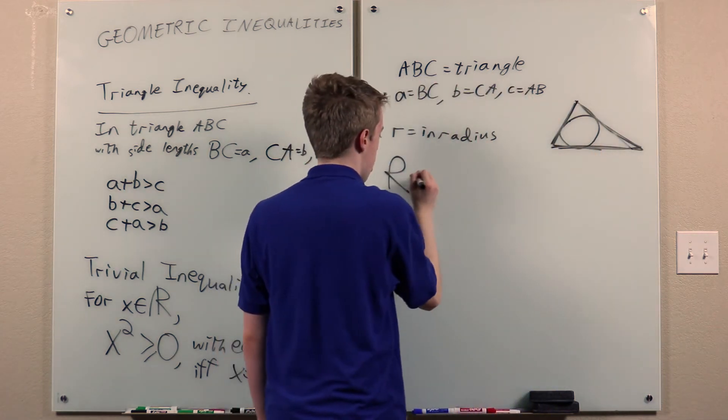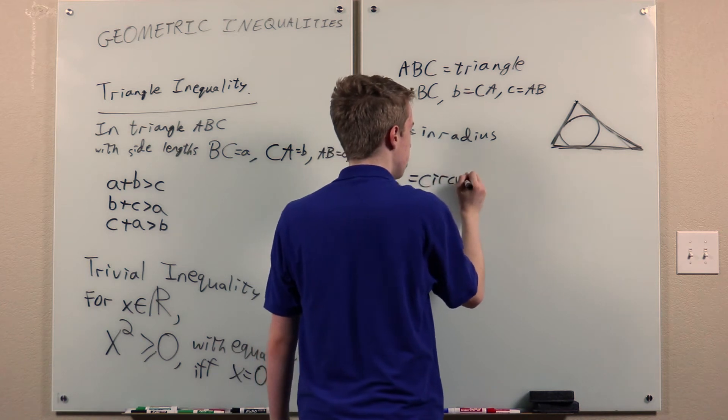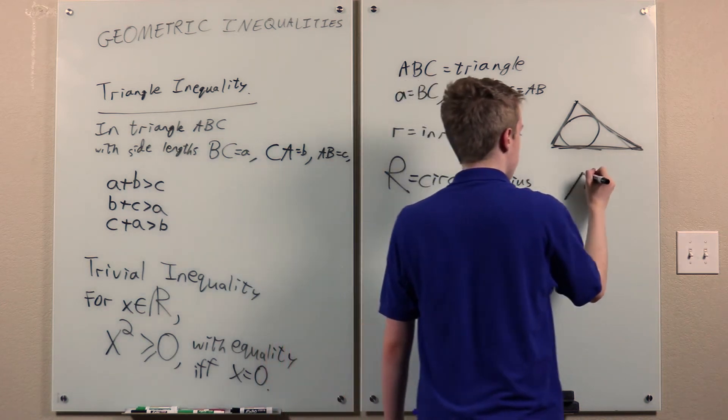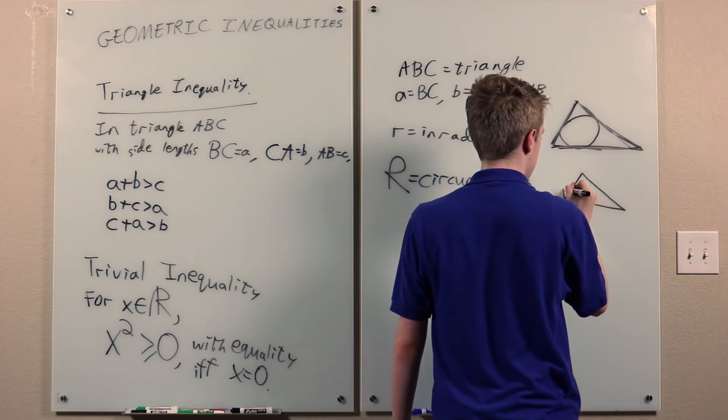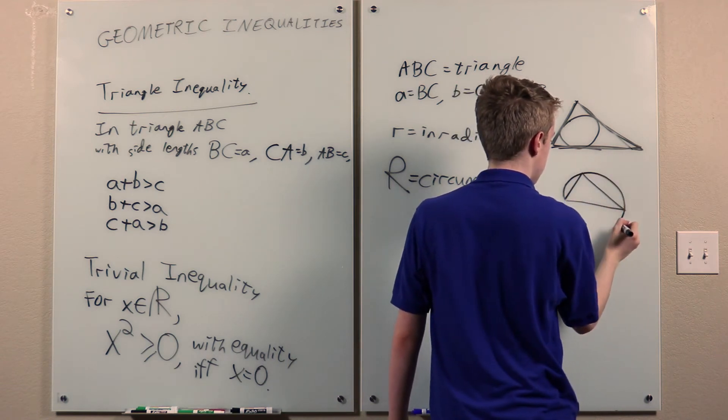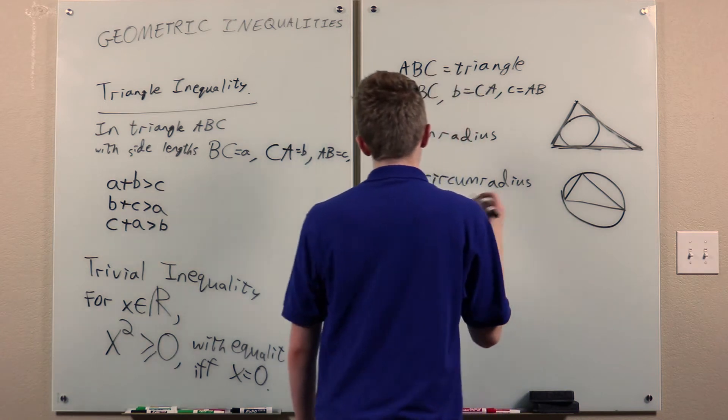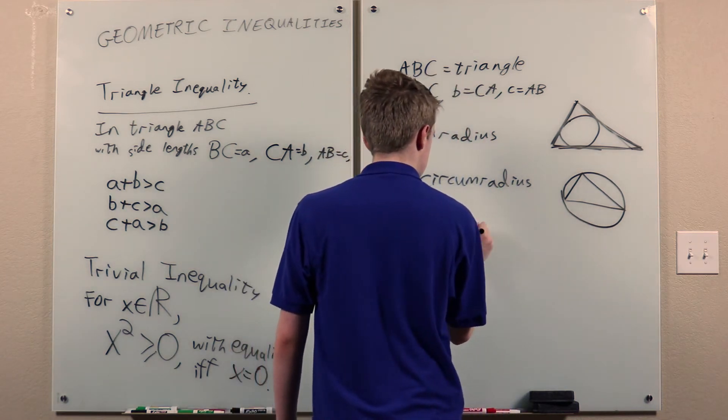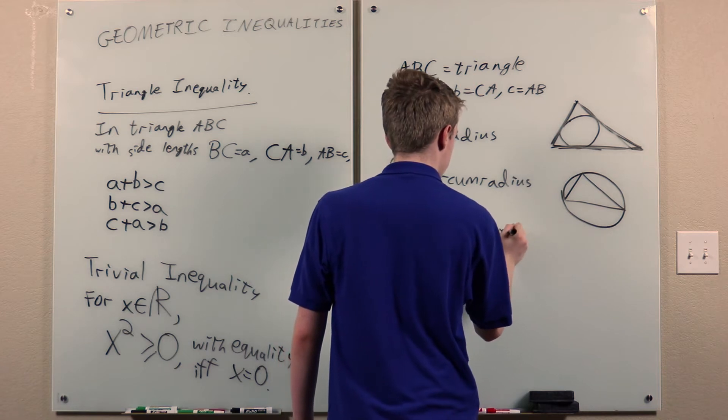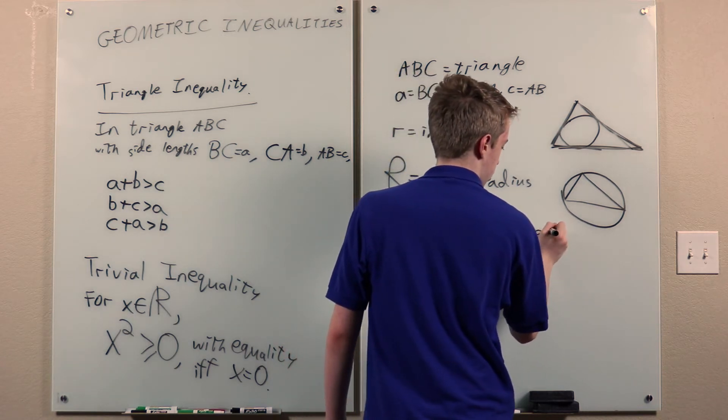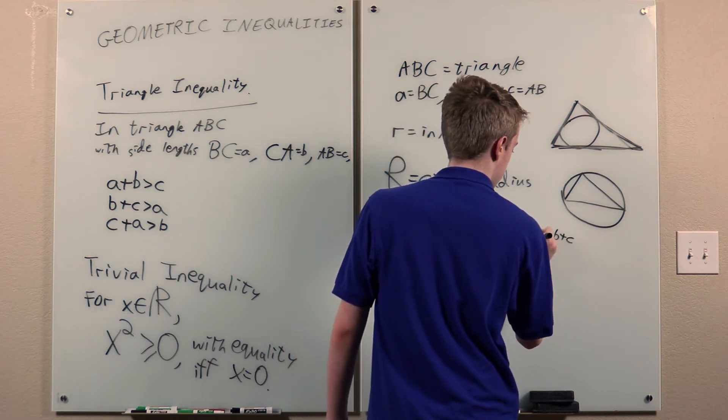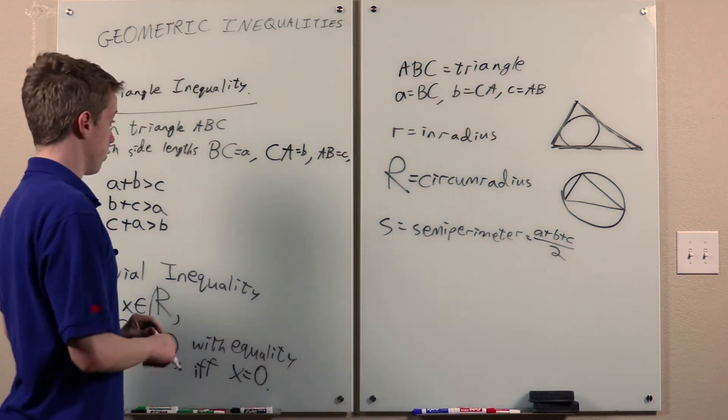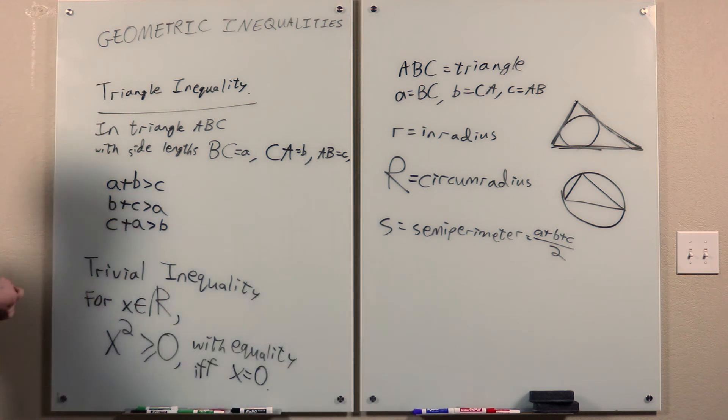Let capital R be the circumradius, the circle passing through all three vertices. And let s be the semi-perimeter, which is the perimeter divided by two.